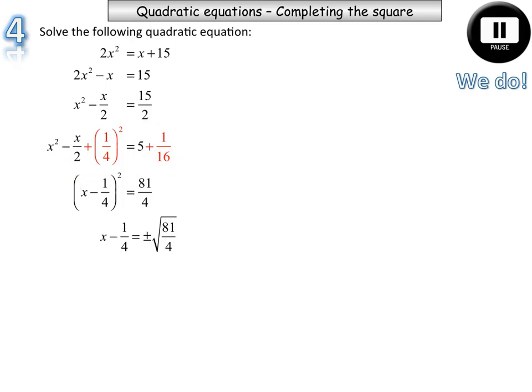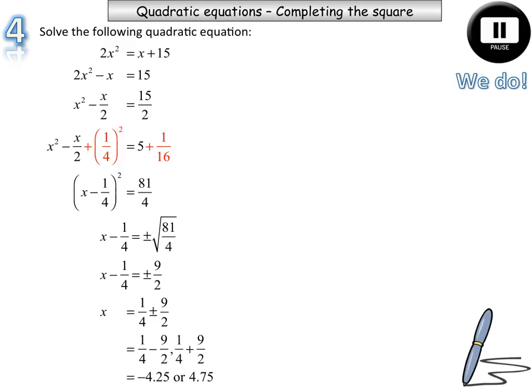Square root both sides. Get the negative a quarter to the right-hand side. And then working that out. Two solutions. I get negative 4 and a quarter or 4 and 3 quarters.